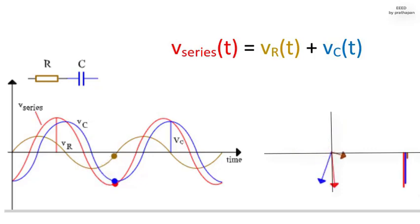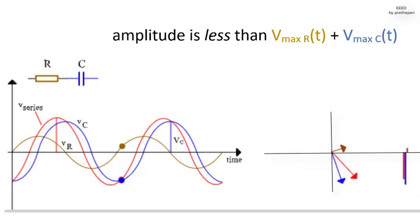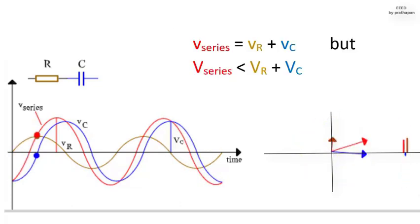However, the addition is complicated because the two are not in phase. The next animation makes this clear. They add to give a new sinusoidal voltage, but the amplitude is less than VmR T plus VmC T. Similarly, the AC voltages amplitude times square root 2 do not add up. The amplitudes and the RMS voltages V do not add up in a simple arithmetical way.